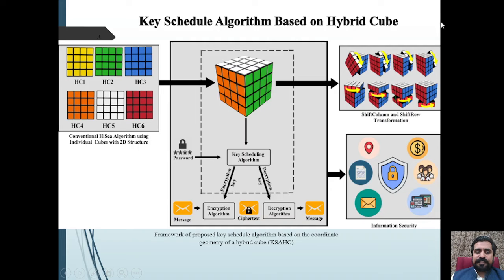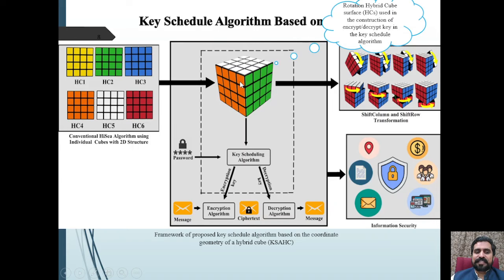The first step in the development of KISAK is to generate the rotation of the hybrid cube surface, which is the main component in the construction of the encryption and decryption key. In the key scheduling algorithm, the primary and secondary diagonal, circle, triangular hybrid cube layers are involved.